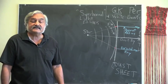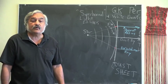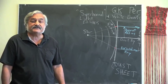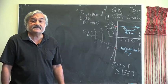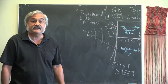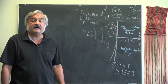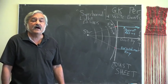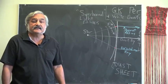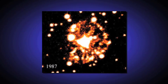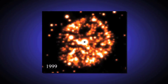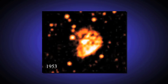Observations over several years showed that it was expanding at the rate of 0.54 arc seconds per year. You can actually see the expansion in this video, which steps you through from 1953 to the present.